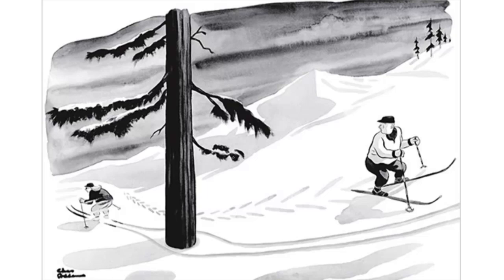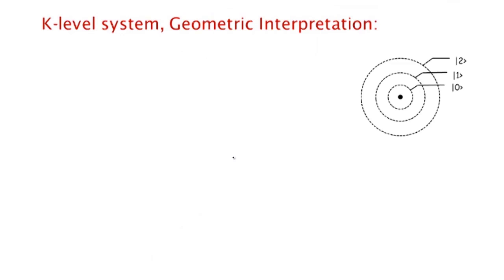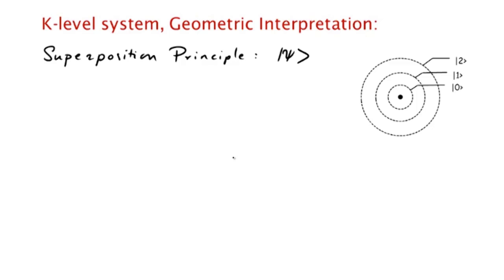So now let's look at a geometric interpretation of the quantum state. Geometrically, here's what the superposition principle says: the state of a quantum system, a k-level quantum system, is a unit vector in a k-dimensional complex vector space.